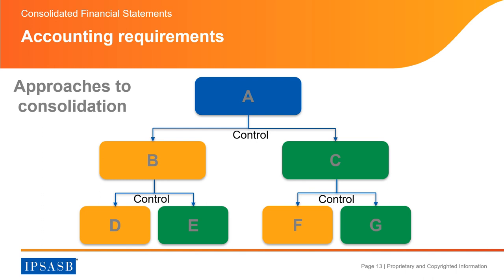There are two approaches to consolidation. The first is to consolidate the whole group of entities at the same time at the top controlling entity level. The second is to consolidate bottom-up. The whole group consolidation means you apply the procedures to all entities irrespective of their relative position — for example, entities A to G in any given order. Bottom-up consolidation means you first apply procedures to entities B, D and E, and C, F and G, and afterwards apply procedures to entity A and the resulting economic entities of B and C.